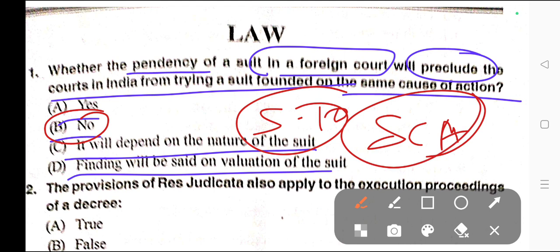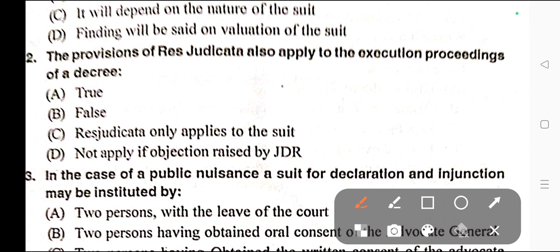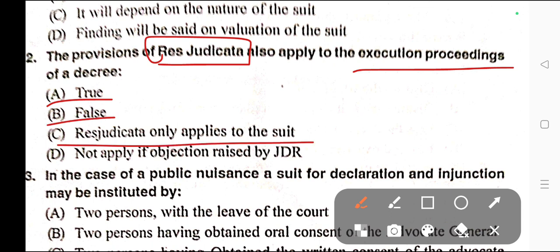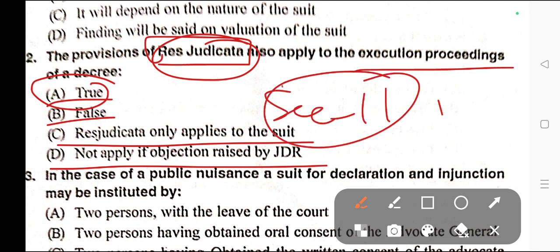Question number two: The provision of res judicata also applies to execution proceedings of a decree. Options: A) True, B) False, C) Res judicata only applies to the suit, D) Not apply if objection is raised by JDR. Correct answer is option A — True. For reference, you can also read Section 11, Explanation 7 of CPC.